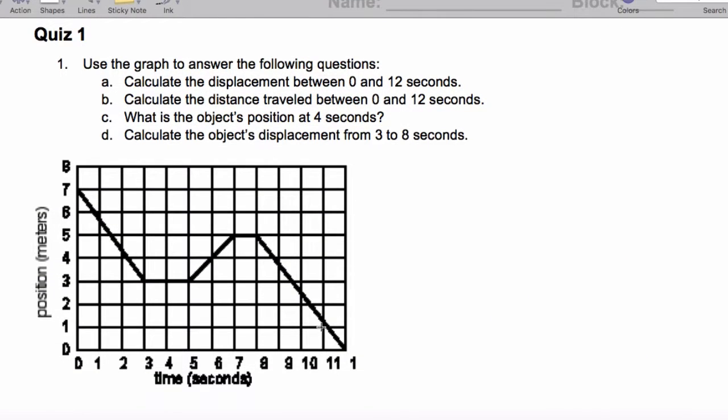So the displacement between 0 and 12 seconds - I apologize, that should be a 2 right there. Let's go ahead and get this displacement. So for A, we end up at 0 having started from 7, so that's negative 7 meters.